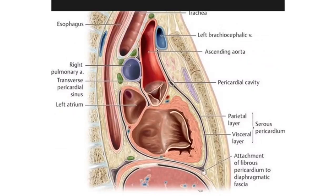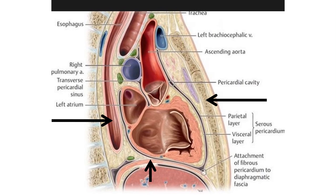This is a sagittal view of the thoracic cavity. Anteriorly we see the body of the sternum. The structure immediately posterior to the heart is the esophagus — the tube connecting the pharynx to the stomach. The inferior relation of the heart is the diaphragm.